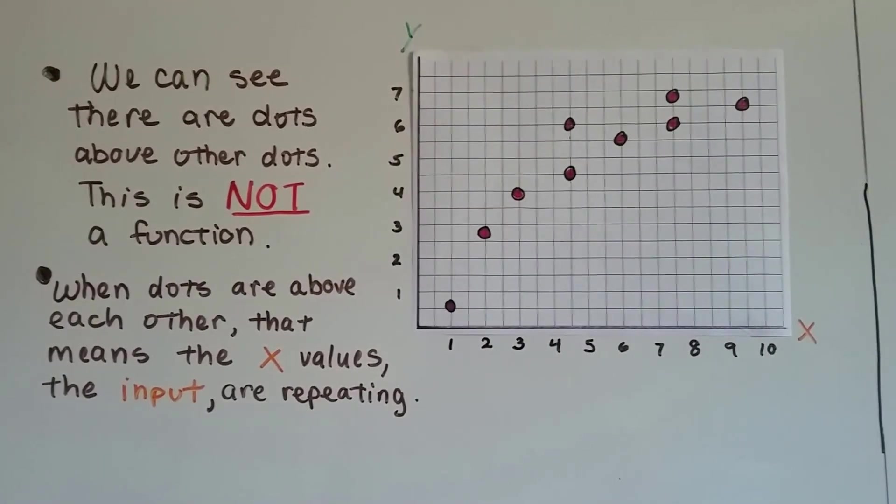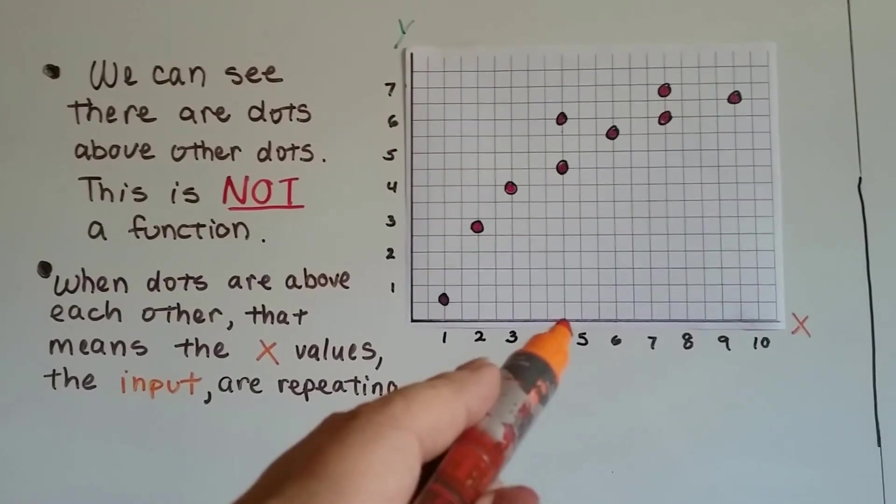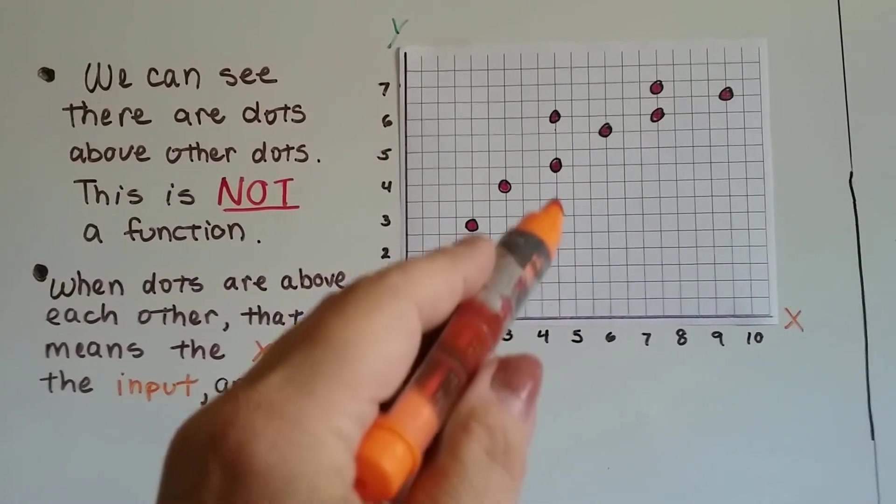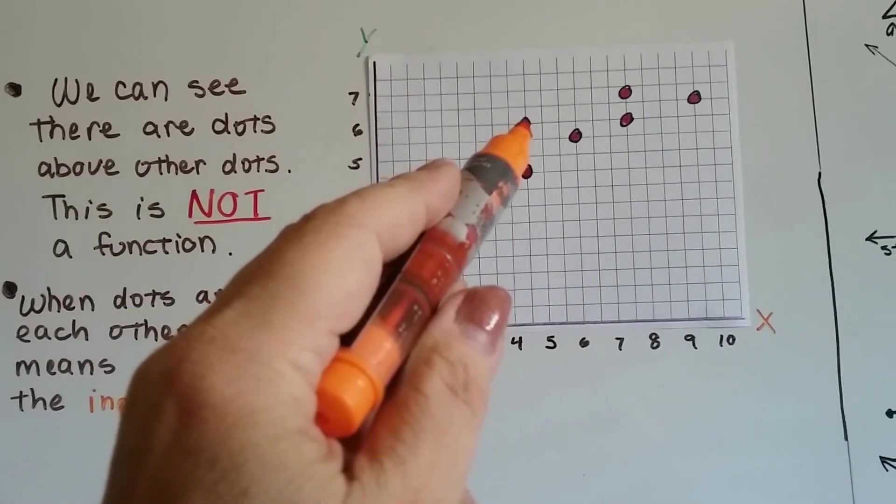When the dots are above each other, that means the x values, the input, is repeating. So if this is in between 4 and 5, this would be 4½. So there's a value for 4½ and another value for 4½.